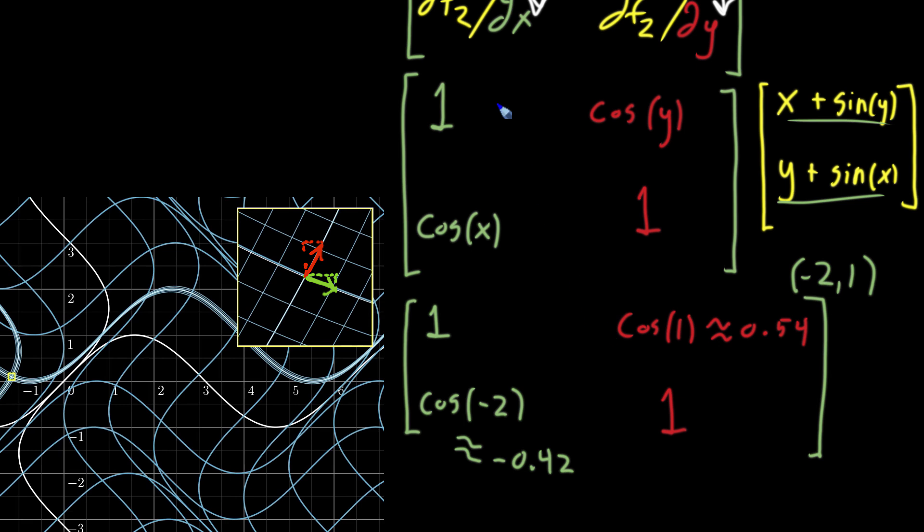But this is something you compute. Again, it's pretty straightforward. You just take all of the possible partial derivatives, and you organize them into a grid like this. So with that, I'll see you guys next video.